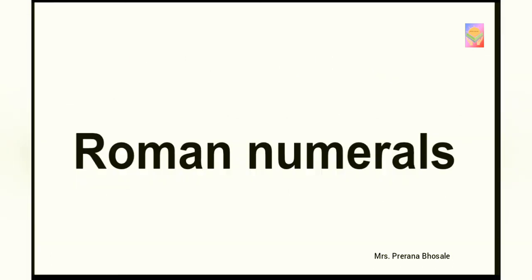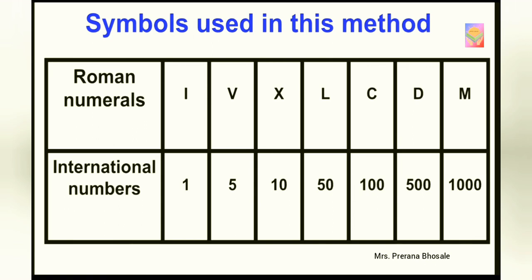In this video, you are going to learn about Roman numerals. In this method, there are certain symbols used to write numbers. Here is the list of symbols. The letter I is the symbol used for 1, V for 5, X for 10, L for 50, C for 100, D for 500, M for 1000.